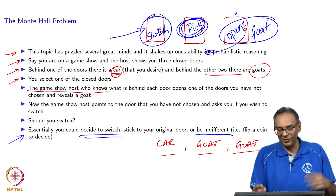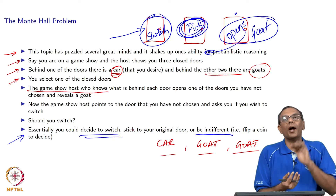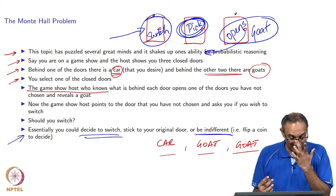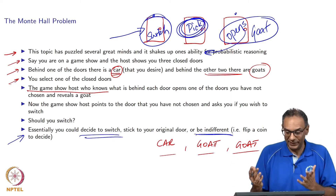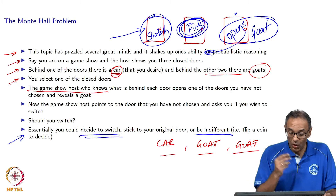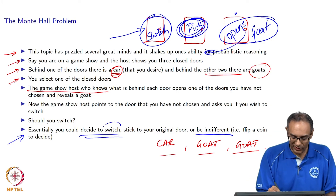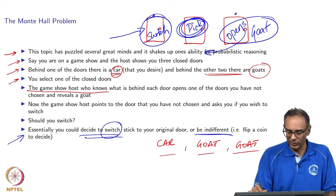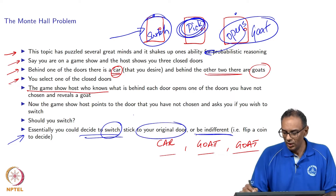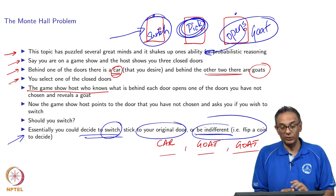What I mean by indifferent is you are thinking 50-50: flip a coin - if I get heads I will switch, if I get tails I will stick. But you have to make that decision. So this is where the decision comes. What should you decide? Should you switch, should you stick with your original door, or should you flip a coin? What would you do?